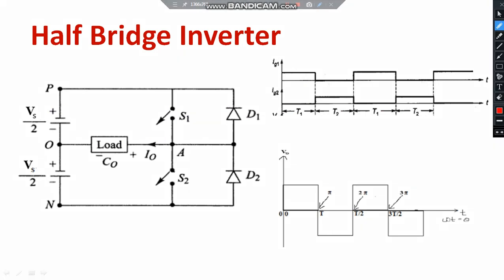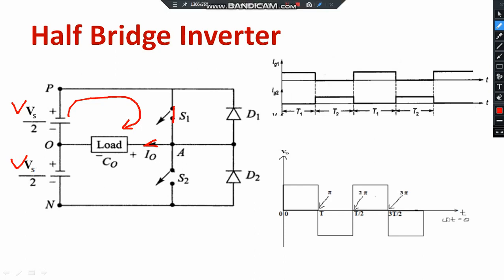Looking at the circuit diagram of the half bridge inverter, the sources are Vs/2 and Vs/2 — the supply is divided, and the load is connected across it. When switch S1 is on, current travels from positive to negative. The direction of current flow through the circuit and the assumed direction of load current are the same, so the load current is positive.